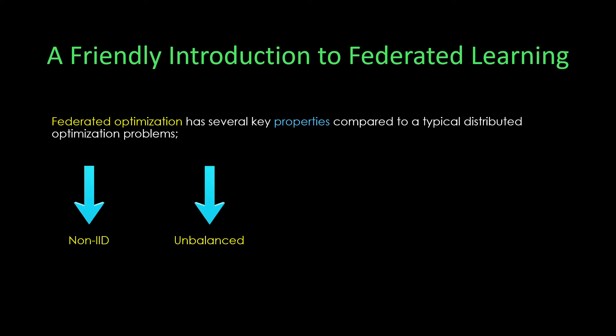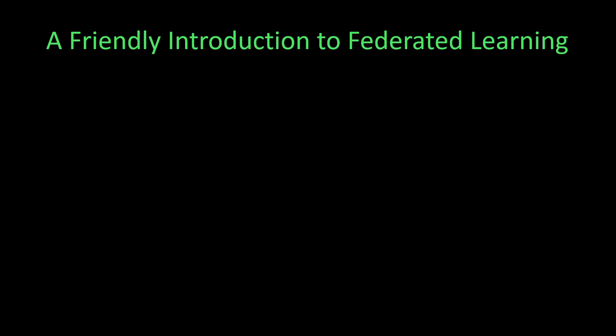The third property is massively distributed system, meaning there are really a lot of mobile devices in the system. The final property is devices with limited communication—some mobile devices might be either offline, slow, or expensive to connect. Here we'll have a look at an animation of how the federated learning algorithm works.